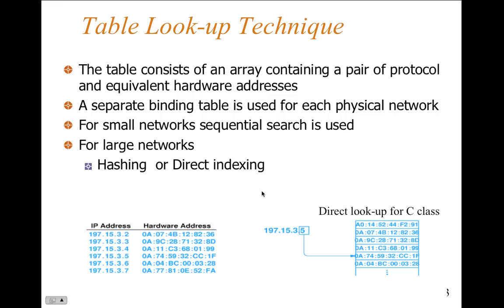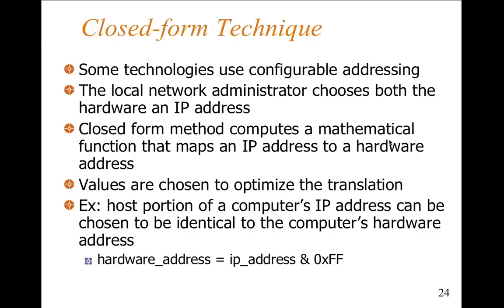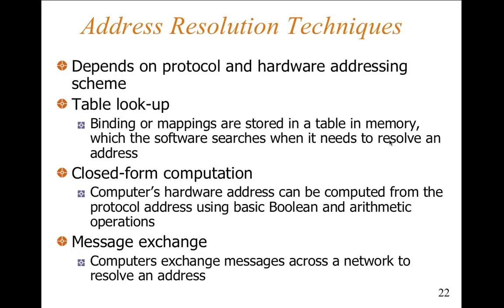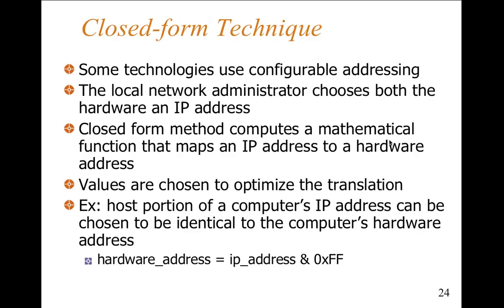In the table lookup technique, the table consists of an array containing pairs of protocol addresses and equivalent hardware addresses associated with them. A separate binding table is used for each physical network. For small networks a sequential search might be used; for larger networks we have hash or direct indexing. Hashing or indexing is needed especially when you don't want a bottleneck to occur with address lookup — you don't want the table to be so large and complicated that it creates a bottleneck for the network.